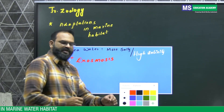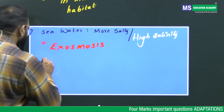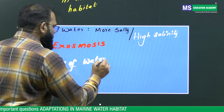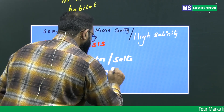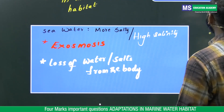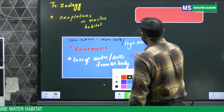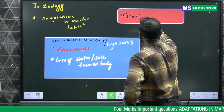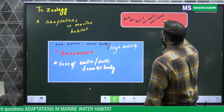You have to understand first: what is exosmosis? It is the loss of water from the body — loss of water or salts through water from the body. Now the question is, how do these animals overcome this exosmosis problem?